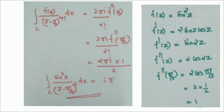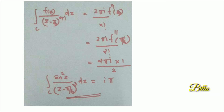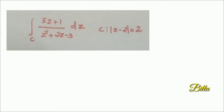Replacing f″(π/6) = 1 in the formula gives 2πi divided by 2, which equals iπ. Therefore the integral over C of sin²(z) by (z − π/6)³ dz equals iπ.